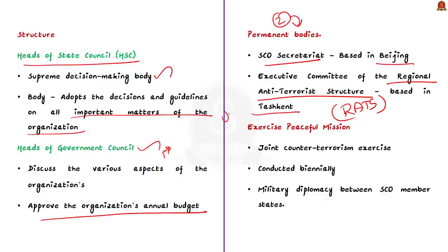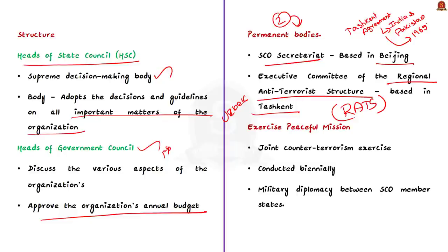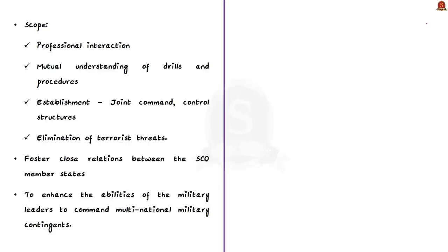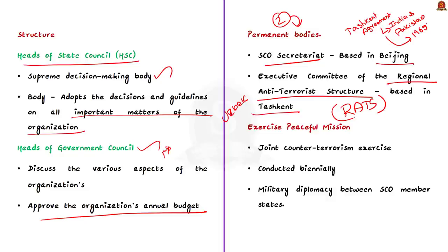Tashkent was the site of the Tashkent Declaration — a peace agreement signed between India's Prime Minister Lal Bahadur Shastri and Pakistan's President Ayub Khan to resolve the Indo-Pakistan War of 1965. The agreement tried to restore economic and diplomatic relationships between the countries, with both sides promising to keep away from each other's internal and external affairs and to work towards the progress in bilateral relations. Coming back to Exercise Peaceful Mission: it is a joint counterterrorism multilateral exercise conducted biennially as part of military diplomacy between SCO member states.